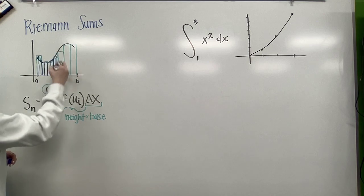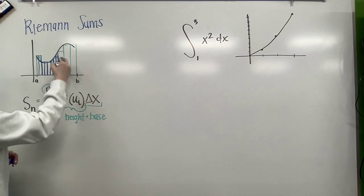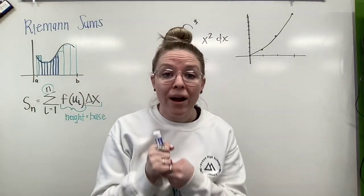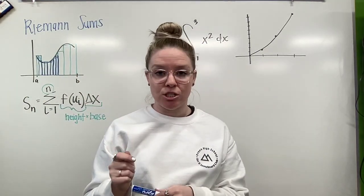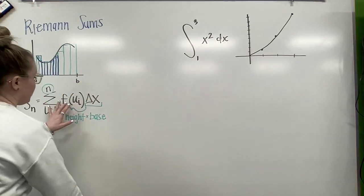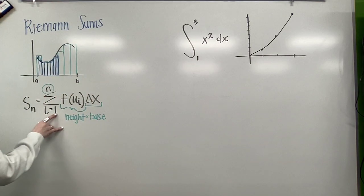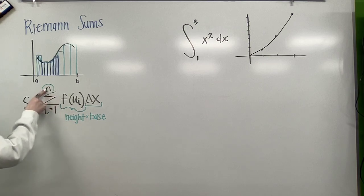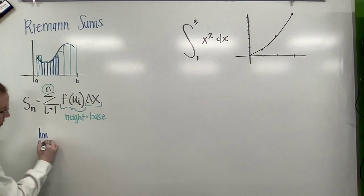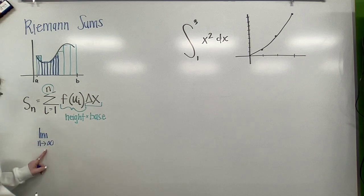As I do this, what's happening is the more and more rectangles I use, the more and more accurate my estimation is going to be. So what we're going to do with that is if we look at this guy, I'm going from my first rectangle to my nth rectangle. Well, what happens if the amount of rectangles I have approaches infinity?